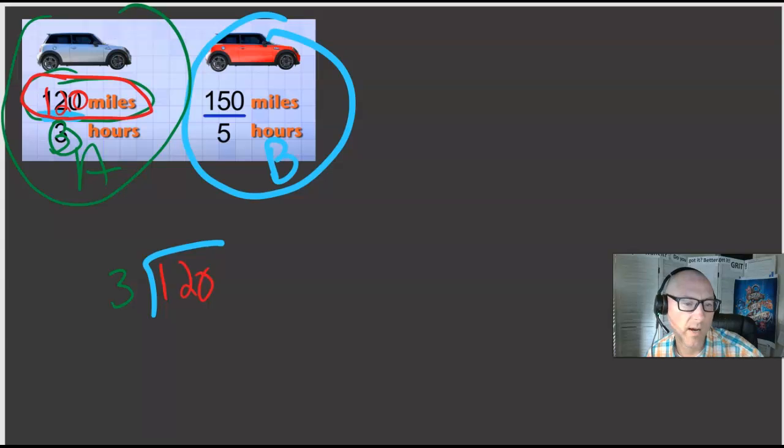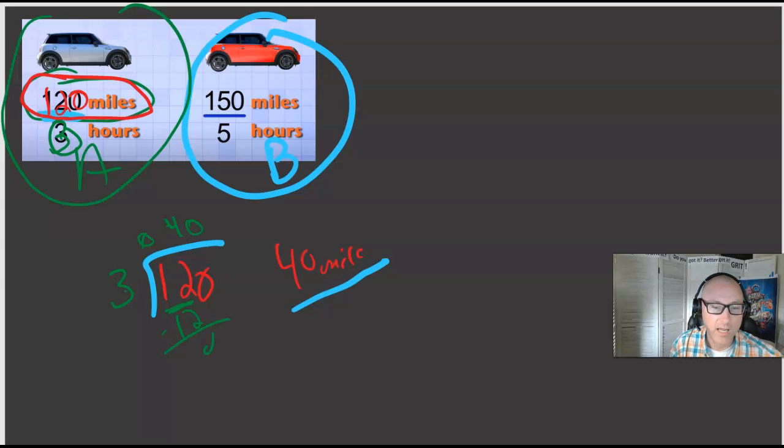3 goes into 1, does not go. 3 goes into 12, it sure does go into 12, and that's going to be 4 times because 3 times 4 is 12. Subtract and there it is: 40. 40 miles per one hour, 40 miles per hour. So this car's average speed, we'll call it car A, is 40 miles per hour.